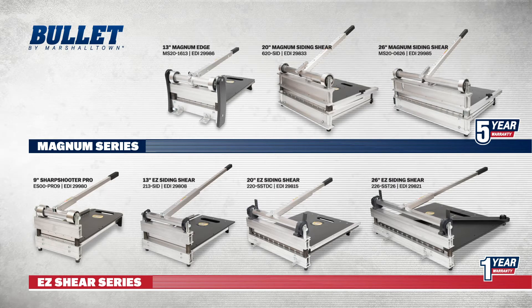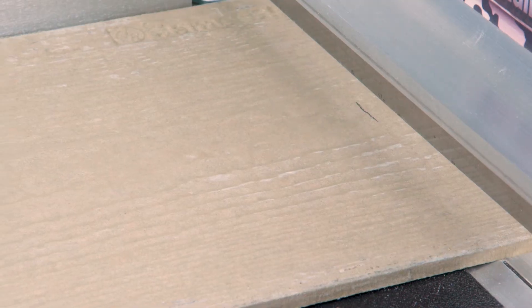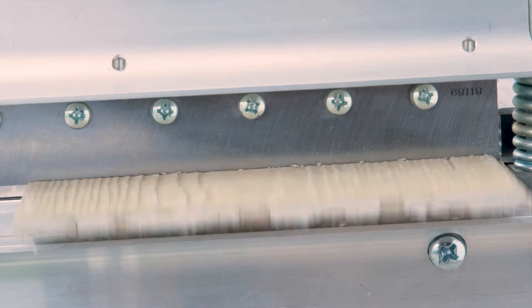The Magnum line are our professional line of shears. They feature an uncompromising, rugged build that ensures years of use for the siding professional. It comes with a five-year warranty.